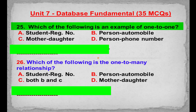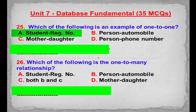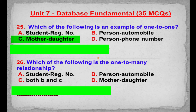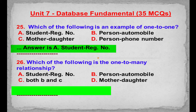MCQ number 25: Which of the following is an example of one-to-one? Option A: Student registration number. Option B: Person automobile. Option C: Mother daughter. Option D: Person phone number. Correct answer is Option A: Student registration number.